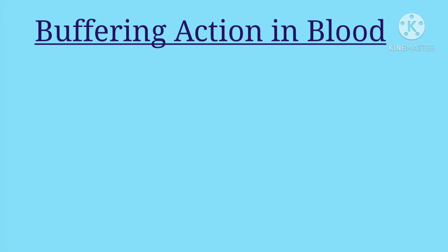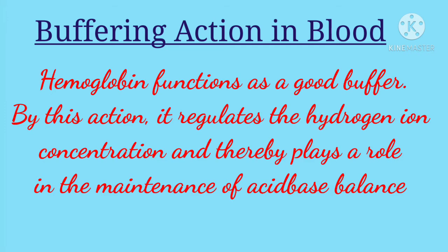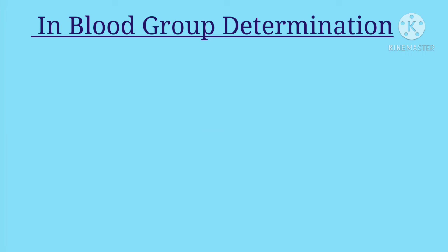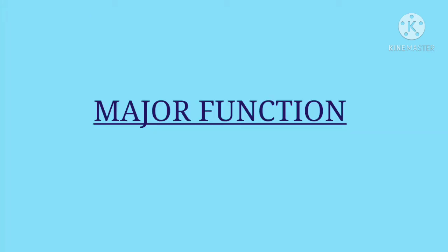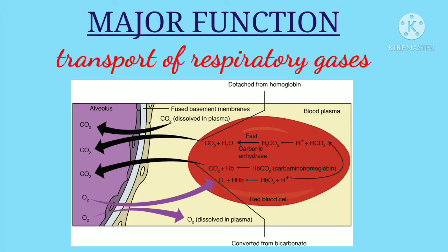Third is buffering action in the blood. Hemoglobin functions as a good buffer. By this action, it regulates the hydrogen ion concentration and thereby plays a role in maintenance of acid-base balance. And lastly, fourth is in blood group determination. RBCs carry the blood group antigens like antigen A, antigen B and RH factor. This helps in determination of blood group and enables prevention of reactions due to incompatible blood transfusion. Remember that the major function of RBCs is to transport the respiratory gases.